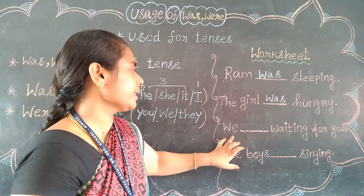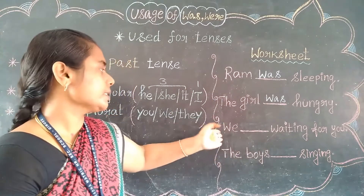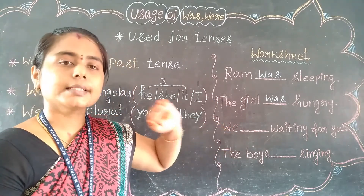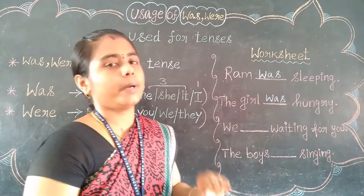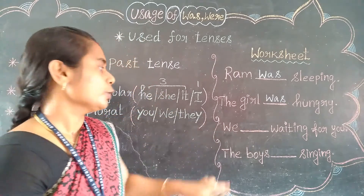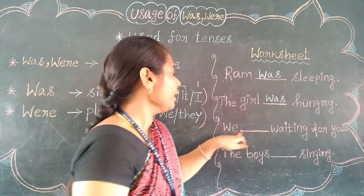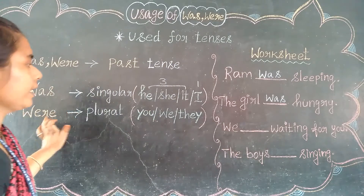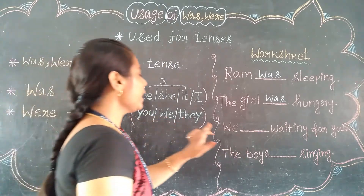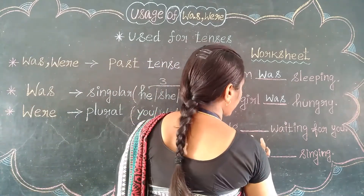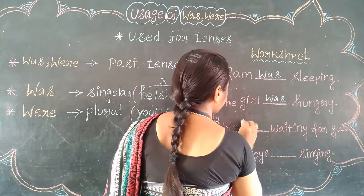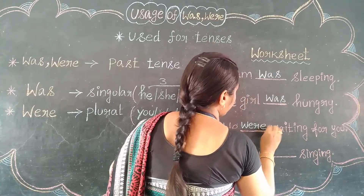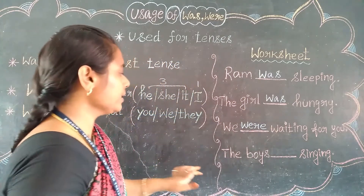Then, look at the third sentence — 'we.' By seeing it itself, I can understand. 'We' means exactly a plural one — more than one person. So, for plural what should we use? That is 'were.' So, 'we were waiting for you.' We were waiting for you.